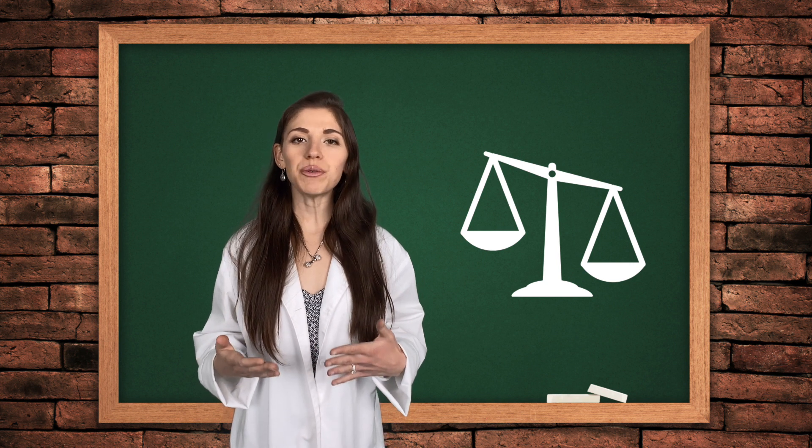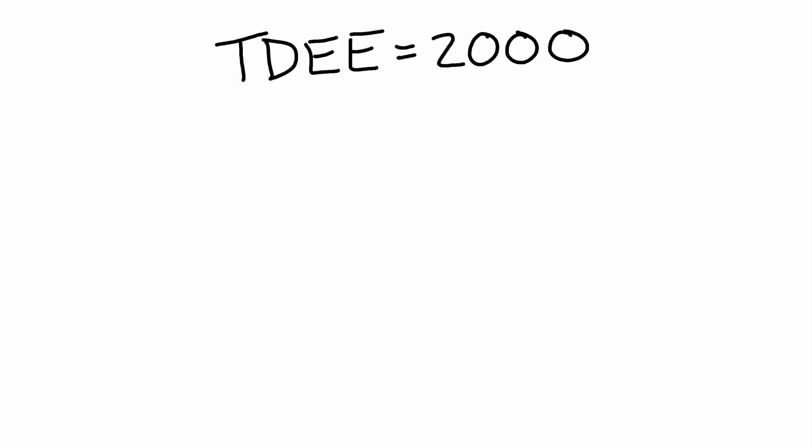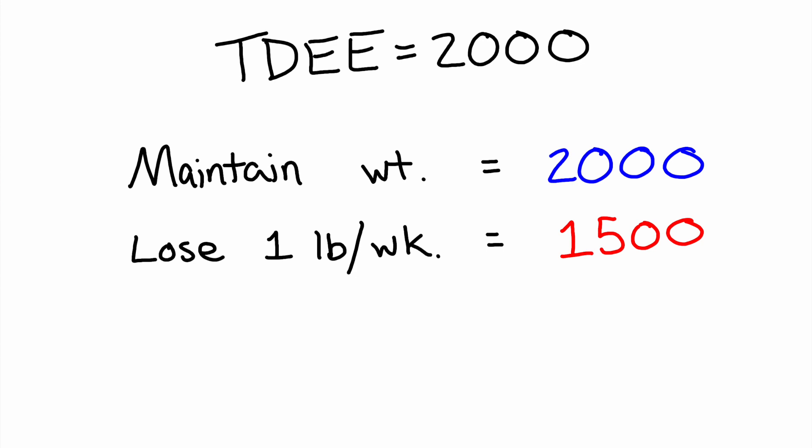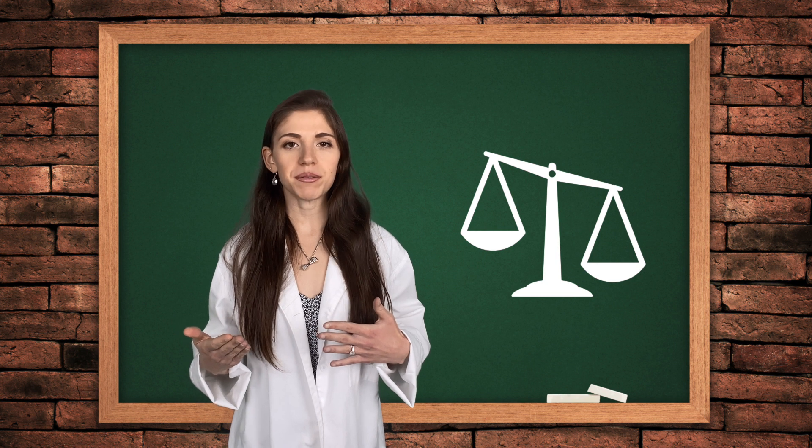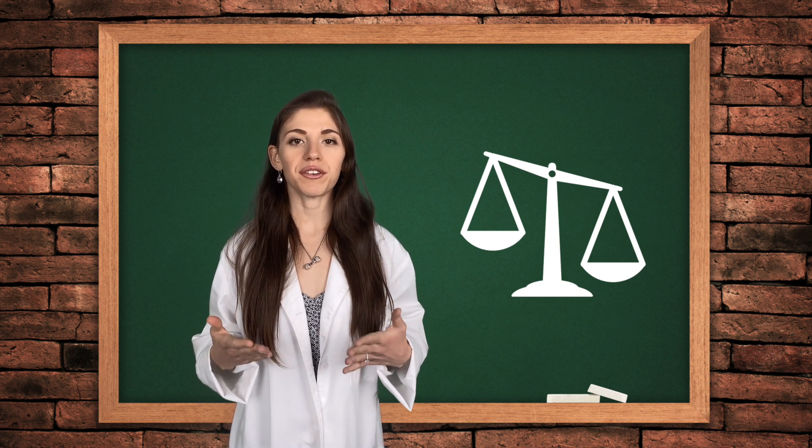On the flip side, if your goal is to gain weight, you should aim to consume about 500 calories above your total daily energy expenditure. So let's just say you calculated 2,000 calories as your TDEE. To maintain, eat 2,000 calories. To lose a pound per week, 1,500. To gain a pound per week, 2,500. I usually recommend a range between 250 to 500 calories above or below your energy expenditure depending on your particular goal.